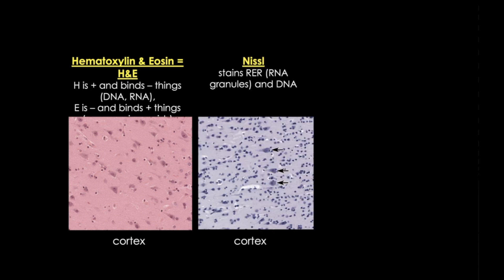Often, we'll use Nissel stain. This is a stain used in nervous tissue, a special stain that binds to rough endoplasmic reticulum and DNA and RNA. But again, we're mostly looking at the cell body here, as you can see by the arrows.